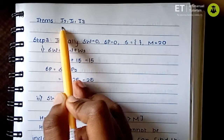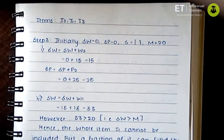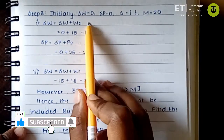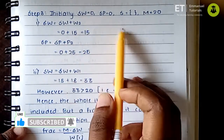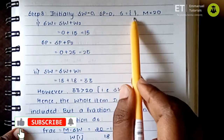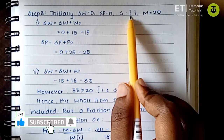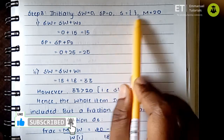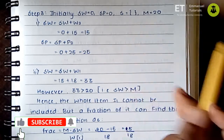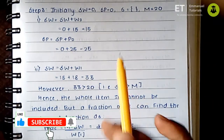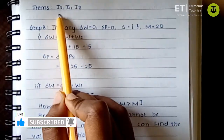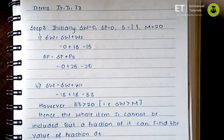The order we have is I2, I1, and I3. We can start solving. We set SW (weight of the sack), SP (profit of the sack), and S (set of included items) all to 0. M is the capacity of the knapsack, which is 20. Based on this order, we will be adding one item at each iteration.